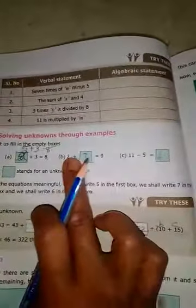Here, 2 plus some value, the answer is given. You can add to get answer 9. So 2 plus 7 equals 9. Next, 11 minus 5, you get answer 6.